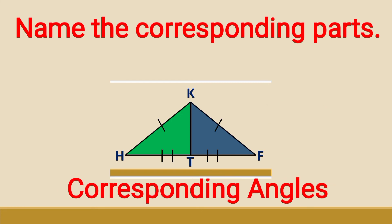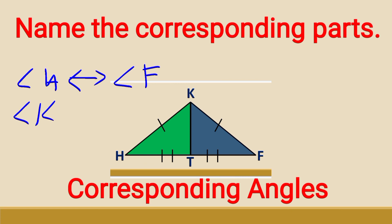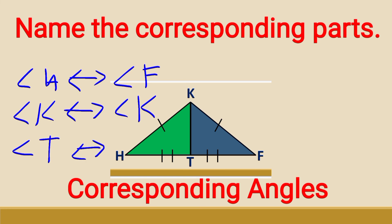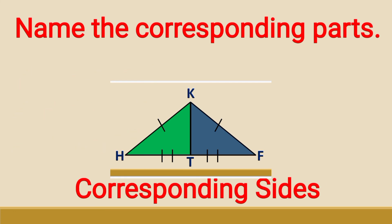Next, the corresponding angles. Angle H of triangle HKT corresponds to angle F of triangle FKT. Angle K corresponds to itself, and lastly, angle T corresponds to itself. Those are the corresponding angles. For the last part, we have the corresponding sides.